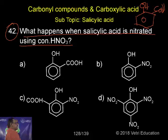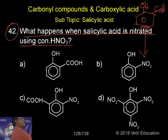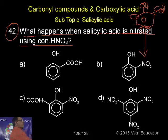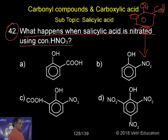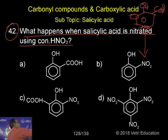During nitration, what will happen: the vacant position — there is one para-vacant position and there is an ortho-vacant position. Automatically, with respect to the OH group, it is even eliminating the OH, entering into the ring, producing 2,4,6-trinitrophenol as the product.